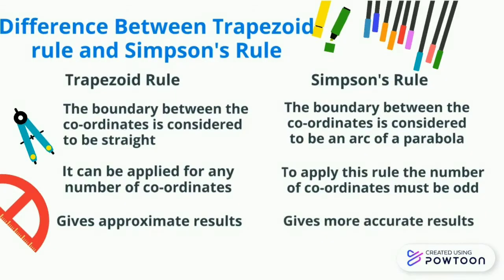Simpson's rule: The boundary between the coordinates is considered to be an arc of a parabola. To apply this rule the number of coordinates must be odd. Gives more accurate results.